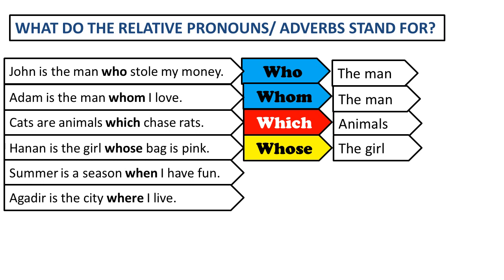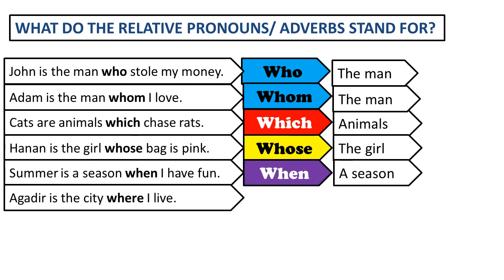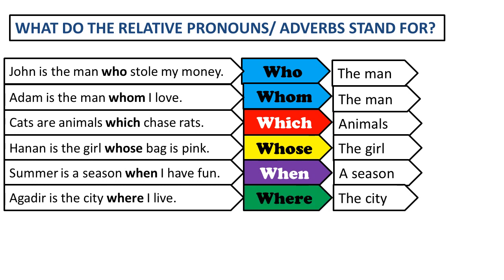Number five: Summer is a season when I have fun. What does when refer to? It refers to a season. The last sentence: Agadir is the city where I live. Where is the relative adverb? Where — it refers to the city.